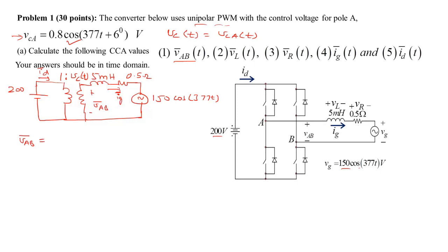The first cycle-by-cycle average value is Vab-bar, which can be written as the secondary voltage of the average model — that is, the primary voltage times the turns ratio. So 200 times Vc, which is the same as Vca, gives us 160 cosine(377t + 6°). This is already in the time domain, so that is the answer for this part.